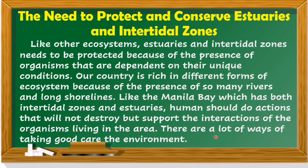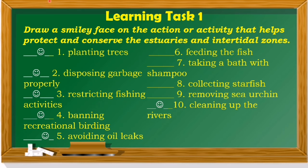There are many ways of taking good care of the environment. For week 8, learning task number 1: draw a smiley face on the action or activity that helps protect and conserve the estuaries and intertidal zones. The answers include: planting trees, disposing garbage properly, restricting fishing activities, banning recreational activities that cause harm, avoiding oil spills, fitting fish, and cleaning up the rivers.